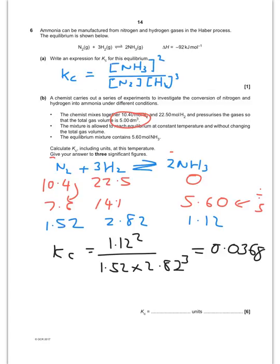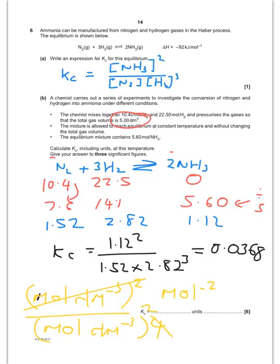For units, it's going to be moles per decimeter cubed squared over moles per decimeter cubed to the power of 4. So that's going to cancel. That will cancel to become dm squared. So your units will end up being moles to the minus 2 decimeters to the 6.